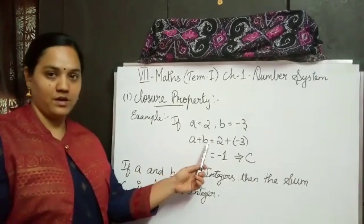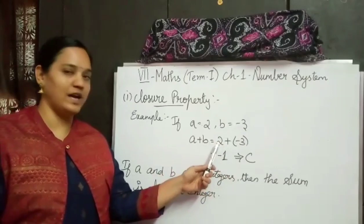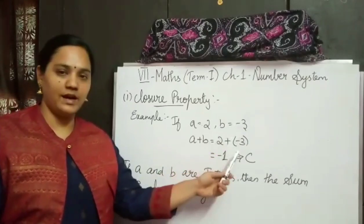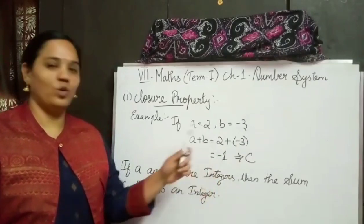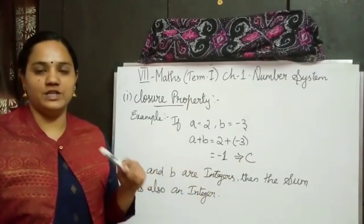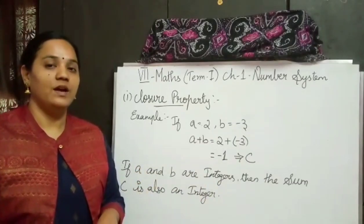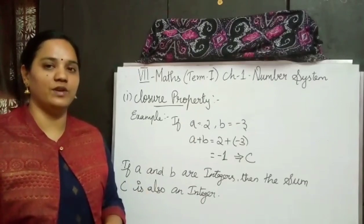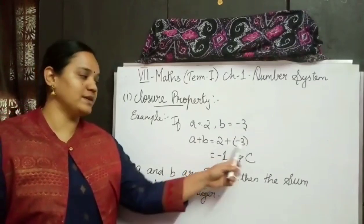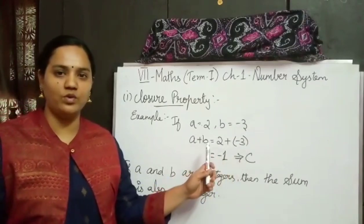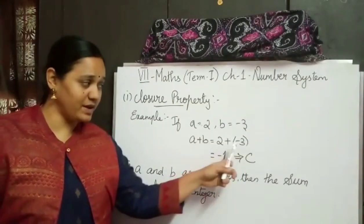So I am adding a plus b. A is 2 and b is minus 3, so I am adding these two numbers. I think you all know about the rule. So what is the rule? If we have same sign we have to add, and if we have different sign we have to subtract. Finally we have to write the greatest number sign. Here both numbers have different sign, so we have to subtract.